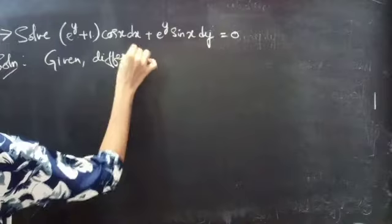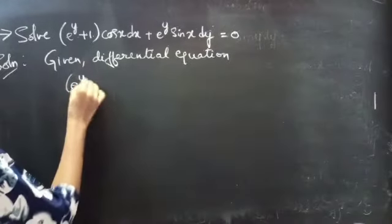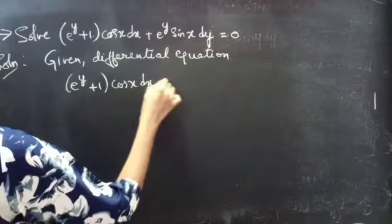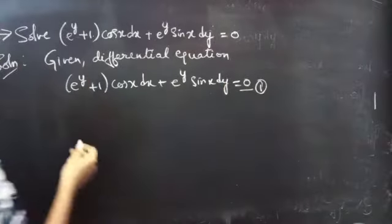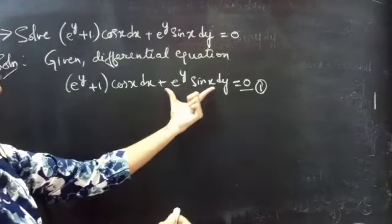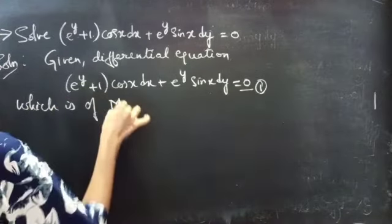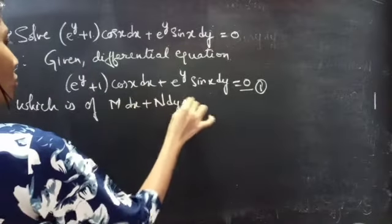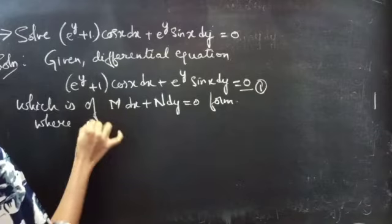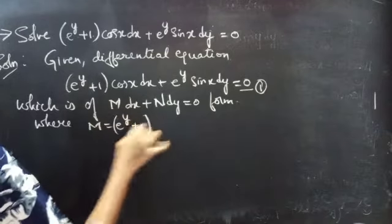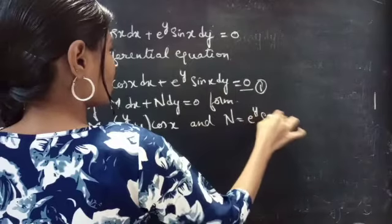Given differential equation: e power y plus 1 into cos x dx plus e power y into sin x dy equals to 0. Consider it as equation 1, which is of M dx plus N dy equals to 0 form. So by comparing these two equations we will get: M equals to e power y plus 1 into cos x, and N equals to e power y sin x.